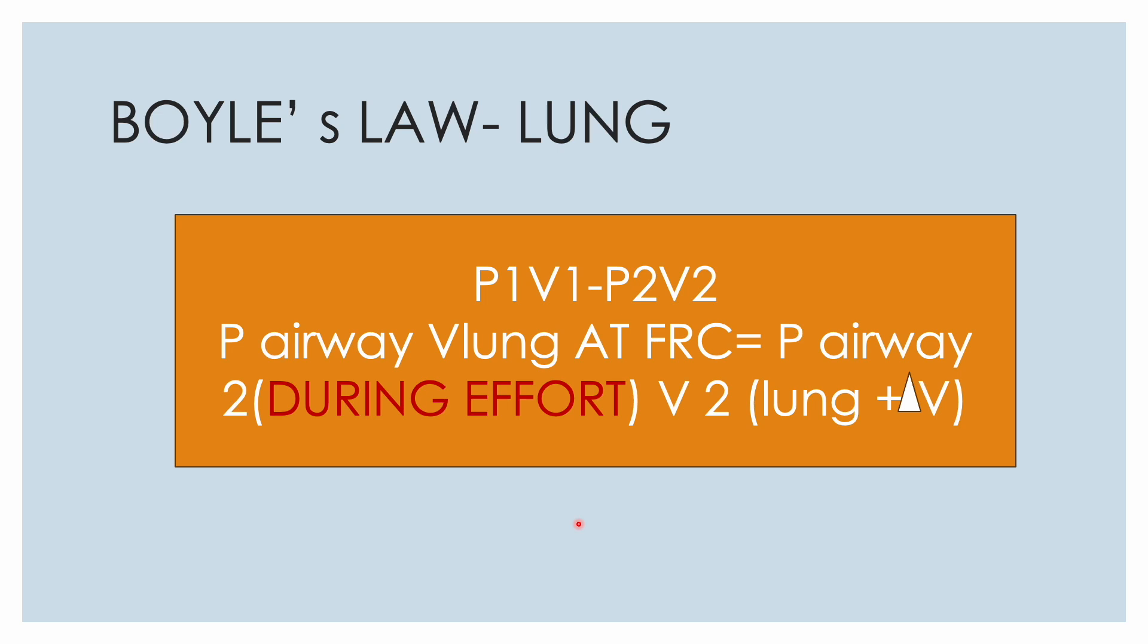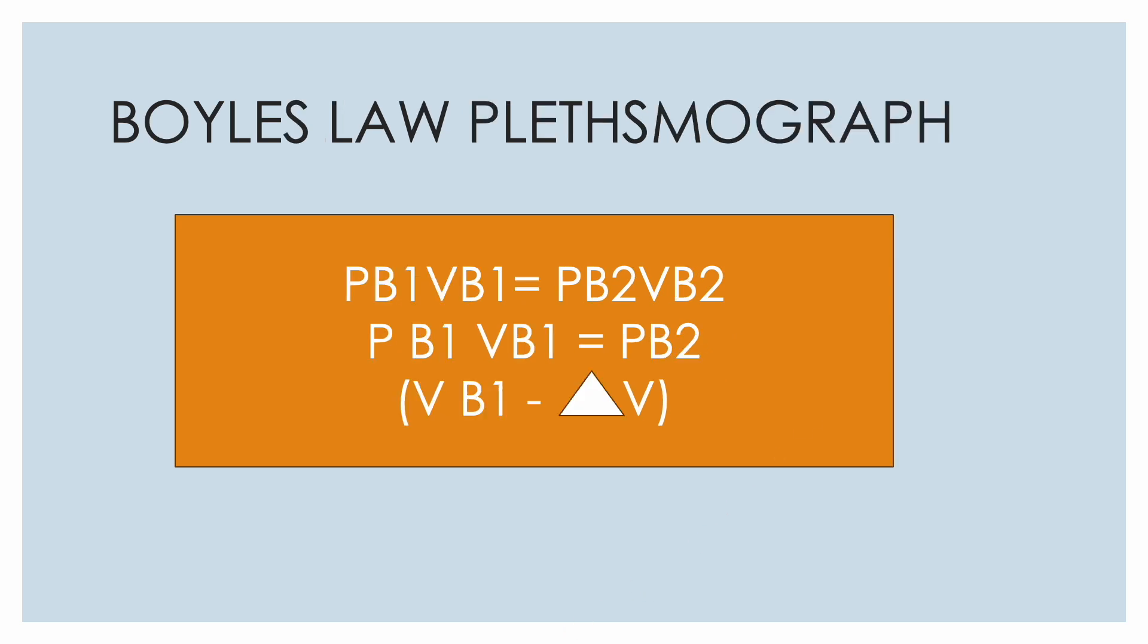And this delta V we derive from the plethysmograph Boyle's law which we did in the previous slide. So if we know that then we can estimate the lung volume. So Boyle's law application to both the plethysmograph and to the lung will help us ascertain the change and from the change and knowing the total volume we can ascertain the existing lung volume.